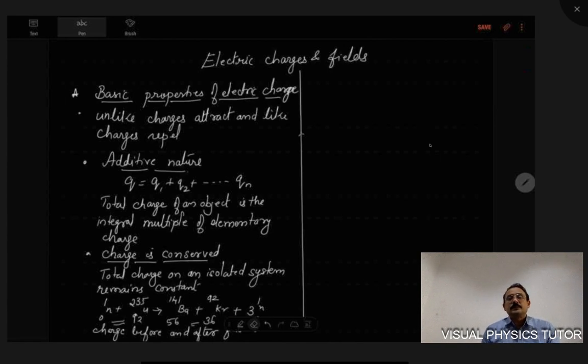What is a physical quantity? Anything that can be measured is called a physical quantity. So charges can be measured, therefore it's a physical quantity. Now how is a charge denoted? The physical quantity charge is denoted by the letter Q, either written in capital Q or in small q. This is the physical quantity notation for charge.